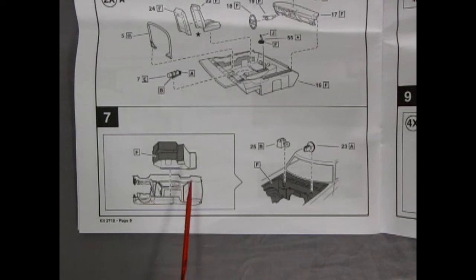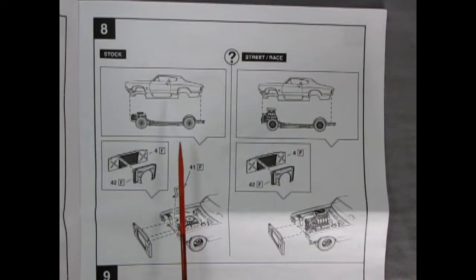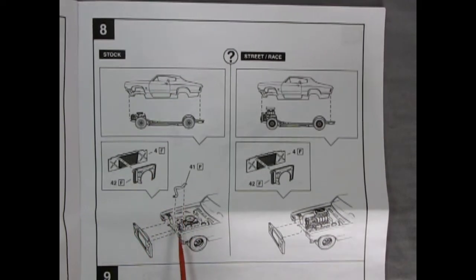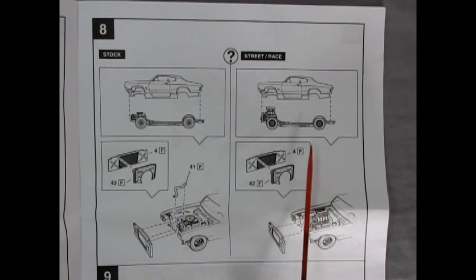Panel seven shows our interior being dropped into the body. And then we've got our brake master cylinder and I do believe heater motor going in on our firewall. Panel eight shows our stock body being dropped onto the chassis. And then our radiator and fan shroud gluing all together in here at the front. As well as our radiator hose for our engine. And the same is being done here on the dragster version except for there's no hose.